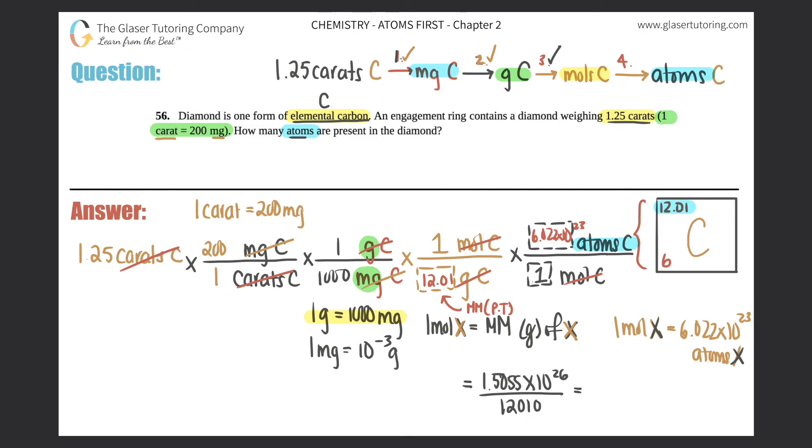You get - and we need three sig figs because that's what we started with in the beginning of the problem. When you're doing conversions you only take the sig figs that are in the beginning. So this would be 1.25 times 10 to the 22nd atoms of carbon. Box that answer off. That is the question.